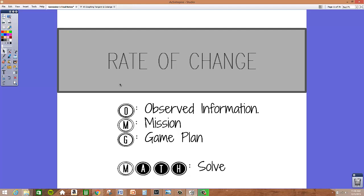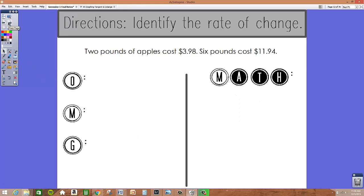Today we're going to be practicing finding the rate of change given a word problem. In this example we're asked to identify the rate of change. Two pounds of apples cost $3.98 while six pounds of apples cost $11.94.